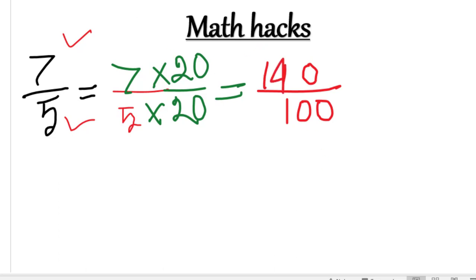So we have 7 times 20 over 5 times 20. In the denominator we have 100, and in the numerator 7 times 0 is 0 and 7 times 2 is 14. So we get 140 over 100, which is very easy - that's 1.40.